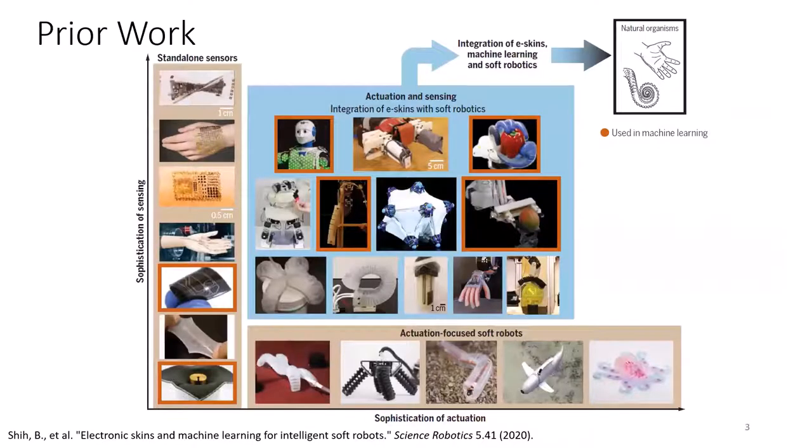This figure from the paper Electronic Skins and Machine Learning for Intelligent Soft Robots is a great summary of recent work in the field. New developments in soft sensing technology in recent years have led to greater availability of sensing modalities in soft robots than ever before. Some examples of these sensors are shown along the y-axis, which is highlighted with the yellow outline. These sensors range from single modality strain, pressure, and deformation sensors, to more complex distributed or multimodal sensors.